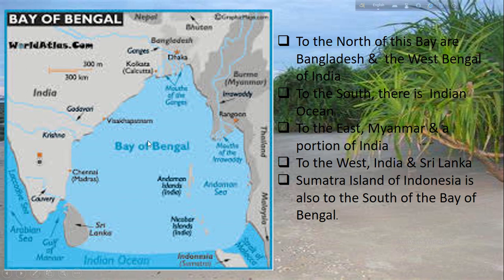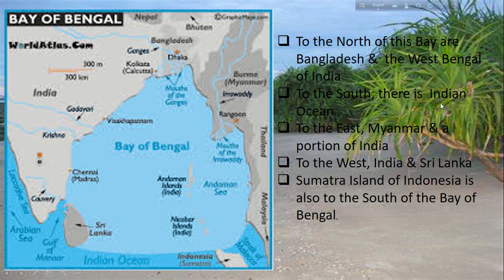Regarding the location of the Bay of Bengal: to the north are Bangladesh and West Bengal of India; to the south is the Indian Ocean; to the east are Myanmar and a portion of Bangladesh; to the west are India and Sri Lanka. The Sumatra Islands of Indonesia are also to the south of the Bay of Bengal.